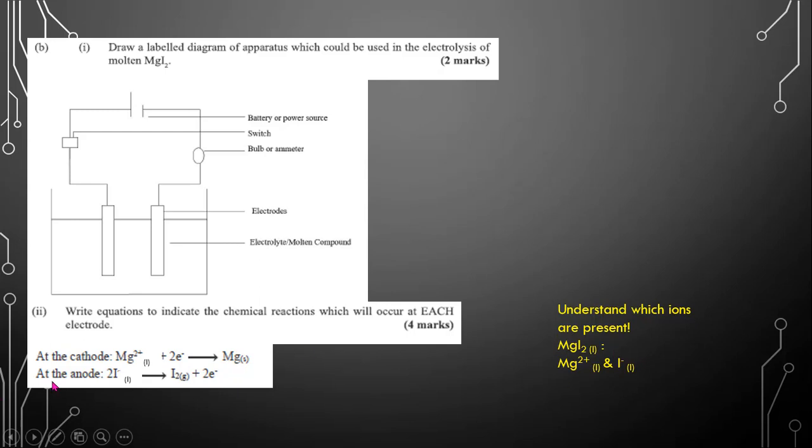At the anode, you have iodide migrating towards it. So the iodide is converted to iodine. How is iodide converted to iodine? You see it's negative here. It must lose the electrons. Or as I like to say, it spits out the electrons in order to form iodine gas. So once iodine gas is being formed, you might see a purple vapor coming out of solution.